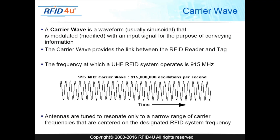The frequency at which a UHF RFID system operates is 915 megahertz — meaning 915 million oscillations per second. All antennas are tuned to resonate only at a narrow range of carrier frequencies centered on the designated RFID system frequency.